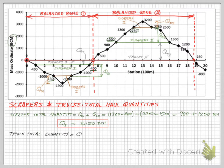We can follow a similar process for the trucks and calculate their total haul quantity to be 1900 bank cubic meters.